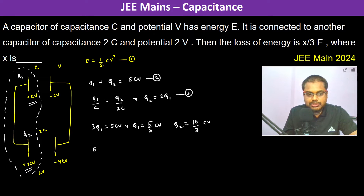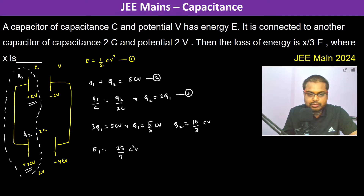The energy stored in the first capacitor E1 equals q1² divided by 2C, which gives (25/9)C²V² divided by 2C, resulting in 25/18 CV².